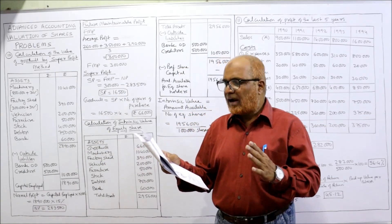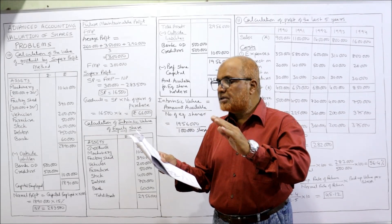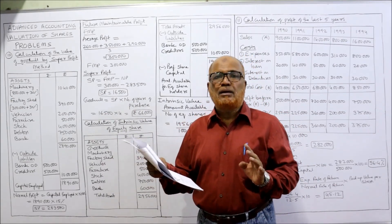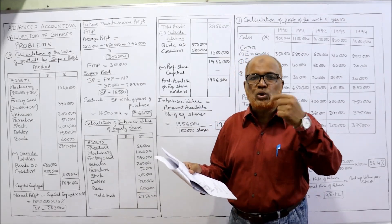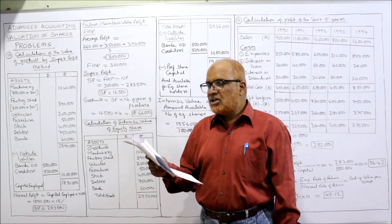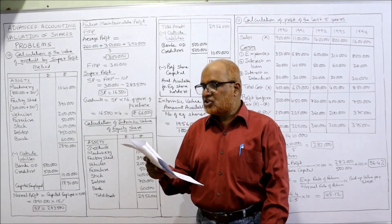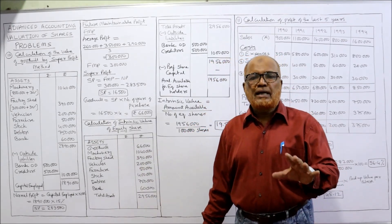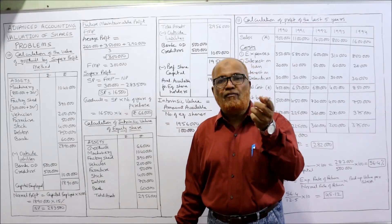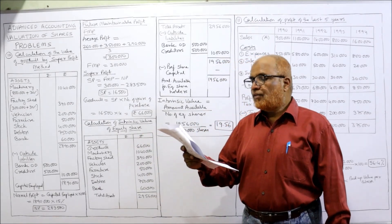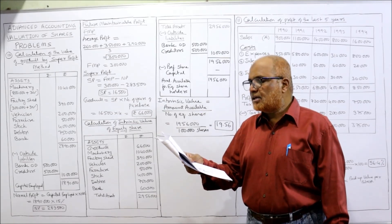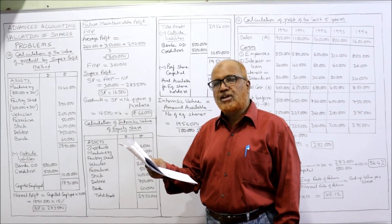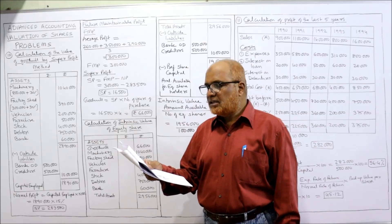The following additional information is furnished: machinery and factory shed are worth 30% above their book value — that means machinery value should be increased by 30% and factory shed should also increase by 30%. Depreciation on the appreciated value of machinery and factory shed is not to be considered for valuation of goodwill and shares. For the purpose of valuation of shares, goodwill is to be considered on the basis of four years' purchase of super profit, based on average profit after tax of the last three years.